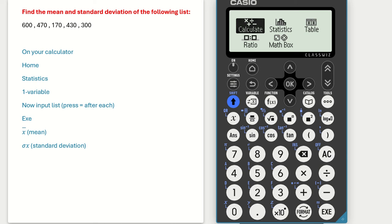In this tutorial video we are looking at how to find the mean and standard deviation on the new Casio FX 83 GTCW calculator, which is the same for the 85 GTCW.